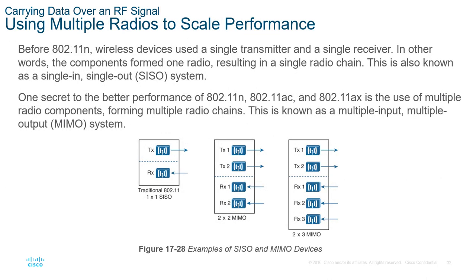MIMO (Multiple Input Multiple Output) is key to modern wireless. Earlier 802.11n devices used a single transmitter and receiver — a Single-In Single-Out (SISO) system forming one radio chain. One secret to 802.11ac and ax performance is heavy reliance on MIMO; as we move through ac and ax technologies, the MIMO capability has been increasing significantly.